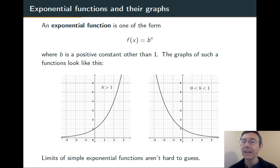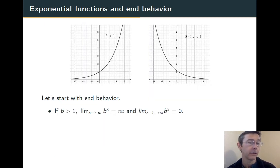As you look at the graphs, it's not hard to deduce what the end behavior is going to be—the limits at positive and negative infinity. When b is greater than 1, as x goes to infinity, y goes to infinity, and as x goes to negative infinity, y goes to 0.